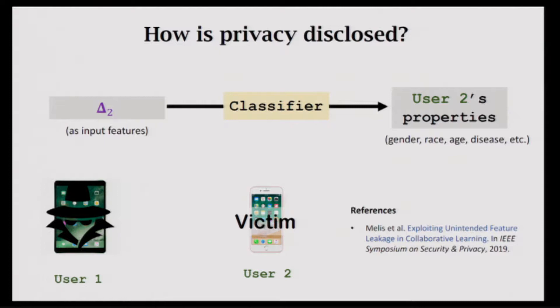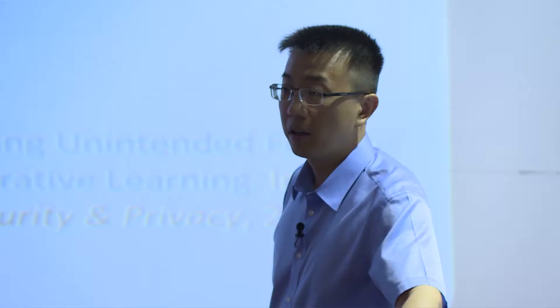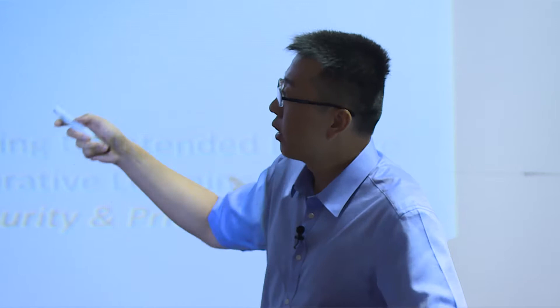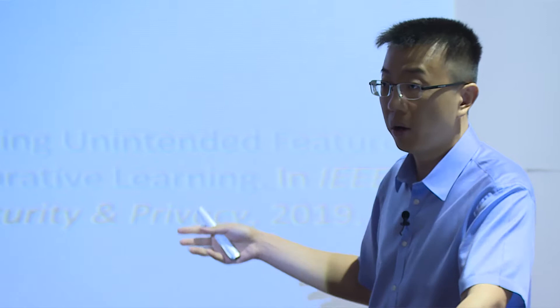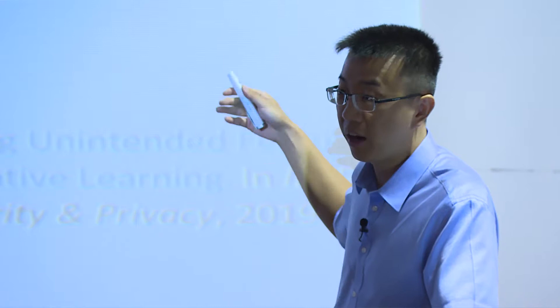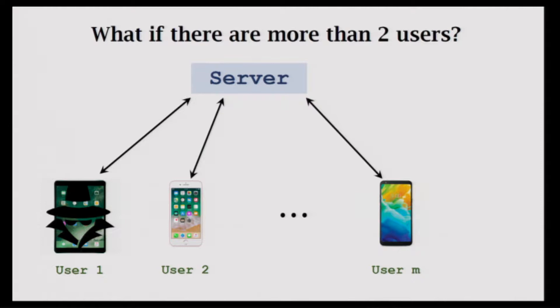This is called the property inference attack. The classifier is trained using gradients as features and is irrelevant to the model itself. Miraculously, it works and the accuracy is frighteningly high. If there are more than two users, the evil user can only know the sum of the other users' gradients. For example, he might learn that some hospitals have patients with a rare disease who are African-American. And of course, the server sees all the gradients, so if the server is evil, nothing is safe—though we typically trust the server.